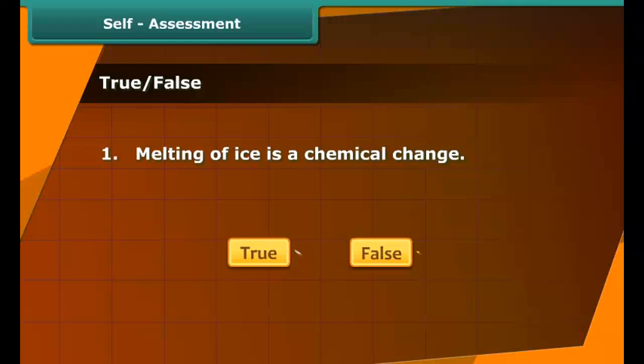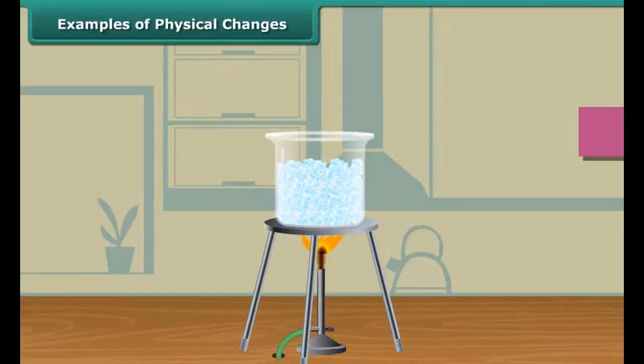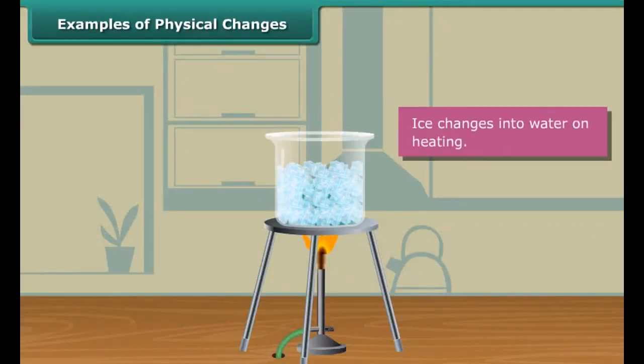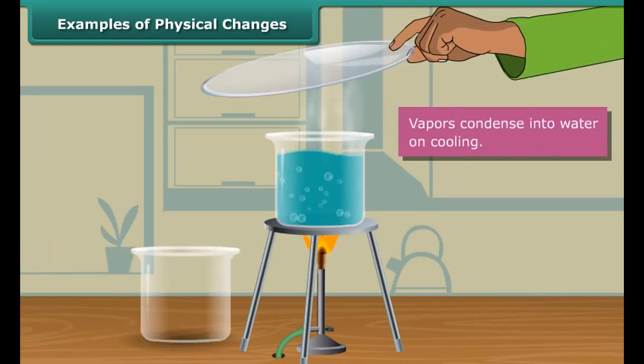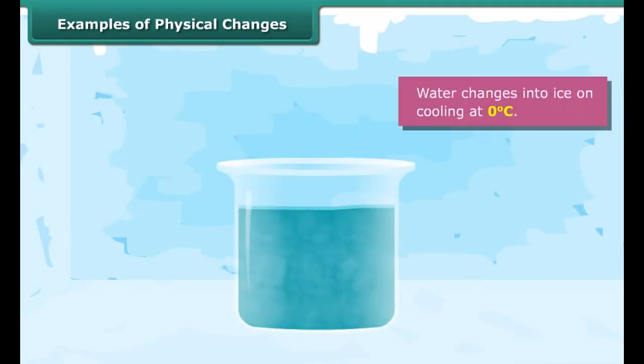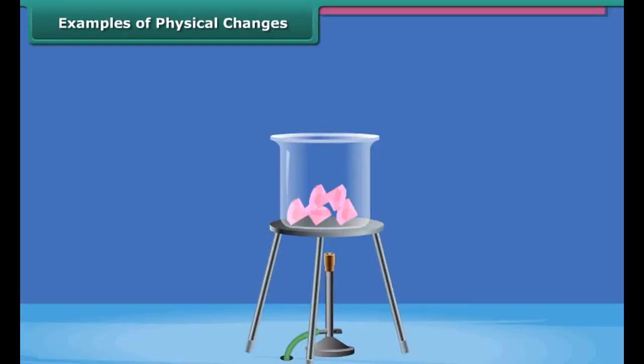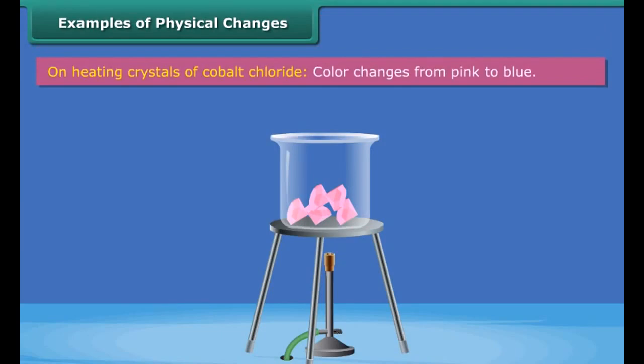Children, on heating ice changes into water. When this water is heated to 100 degrees Celsius it changes to vapors. These vapors on cooling change to water, and when this water is cooled up to 0 degrees Celsius it converts to ice. So in the whole process water changes only the state and chemical composition of water remains same.